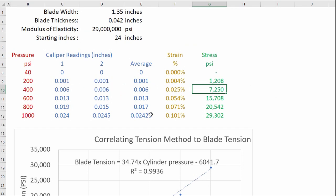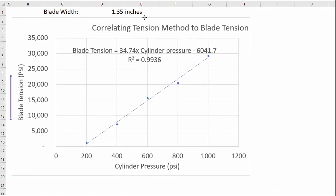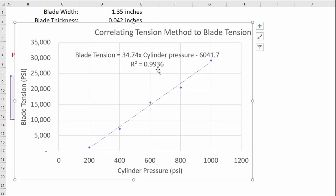So now we have a correlation between however it is that we tension our mill and our blade tension and we'll do one final exercise which is to graph that relationship and so I've done that here I've graphed the relationship between my cylinder pressure and my blade tension here created this graph.